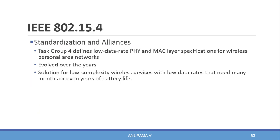Let us look into the standardization and alliance of IEEE 802.15.4. It is governed by a standard body called the IEEE 802.15 Task Group 4, which defines low data rate PHY and MAC layer specifications for wireless personal area networks. This standard has evolved over the years and is a well-known solution for low complexity wireless devices with low data rate that need many months or even years of battery life.